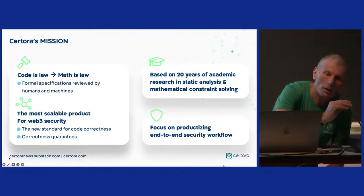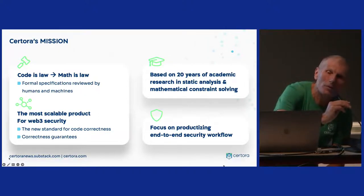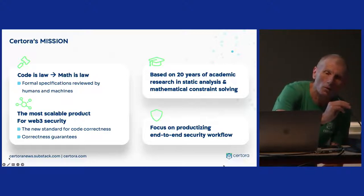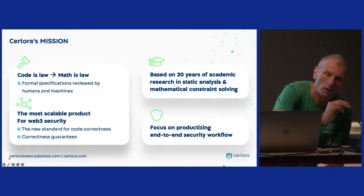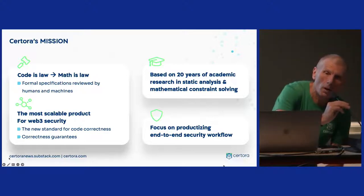When we say formal verification, many people mean different things, but we usually mean formal specification — which means that your code has formal requirements about what it's supposed to do. This is something that we write, sometimes our customers write, sometimes people from outside write, sometimes auditors write, and the auditor reviews that.